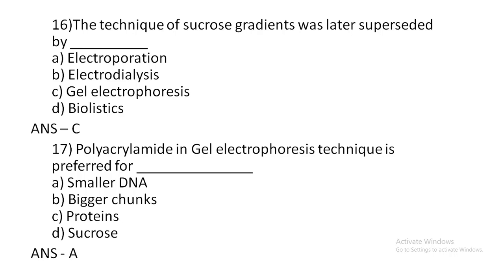Polyacrylamide gel electrophoresis technique is prepared for dash. Option D: smaller DNA. Option D: bigger chunks. Option C: proteins. Option D: sucrose. The correct answer is option A and D — size-based recognition.